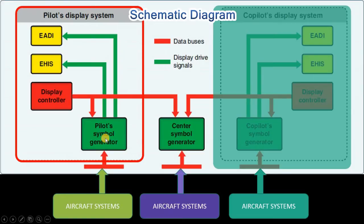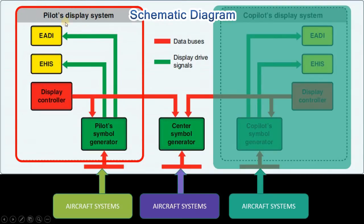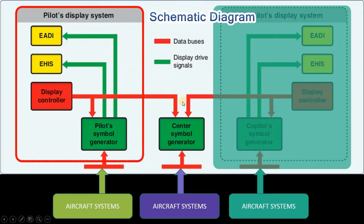Different aircraft systems provide their information to the pilot symbol generator. These pilot symbol generators provide the information to the EADI and the EHSI. We have three symbol generators: one is related to the pilot's display system, one is related to the co-pilot's display system, and the centralized symbol generator is related to the ECAM as well.